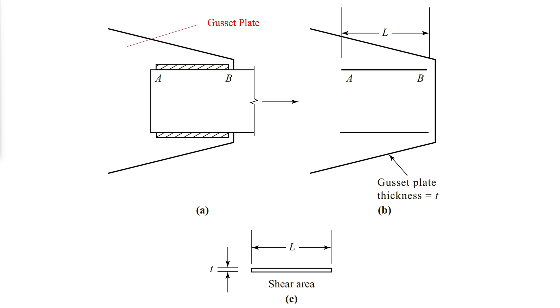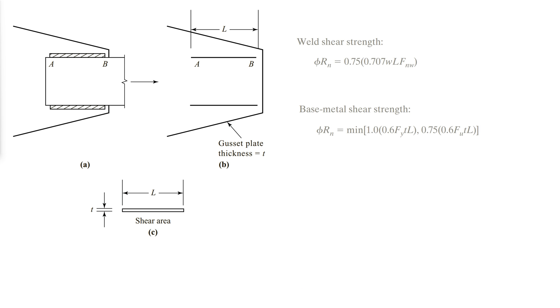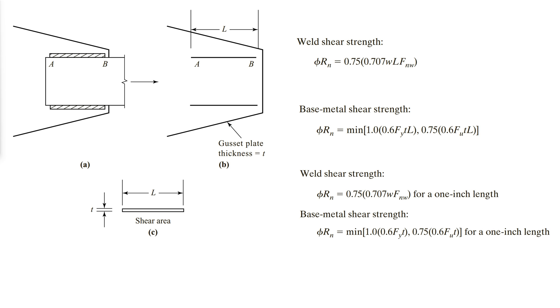The gusset plate can fail either due to shear yielding or shear rupture. In summary, the following set of equations would need to be checked. They can also be written in terms of unit length for convenience.